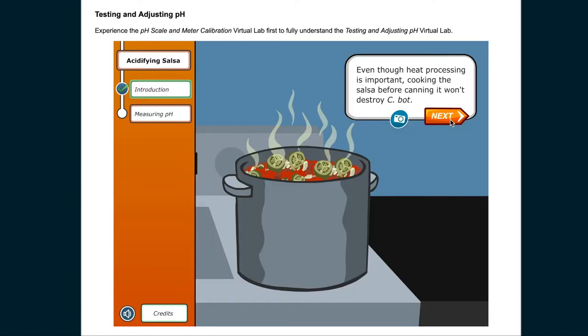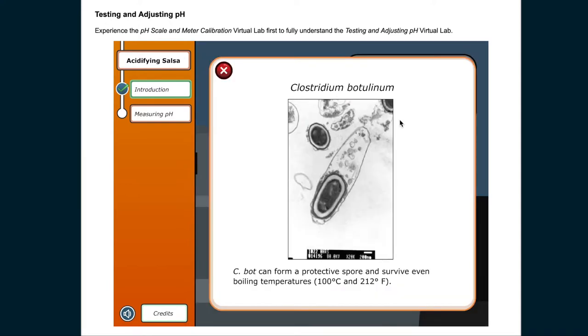Even though heat processing is important, cooking the salsa before canning it won't destroy CBOT. CBOT can form a protective spore and survive even boiling temperatures, 100 degrees Celsius and 212 degrees Fahrenheit.